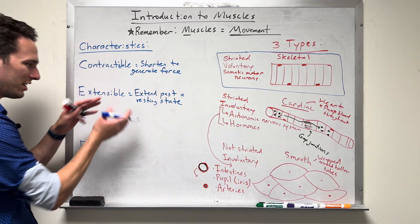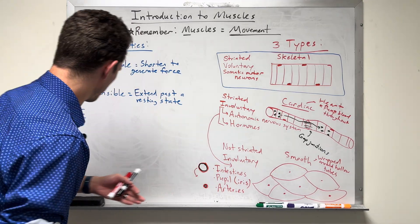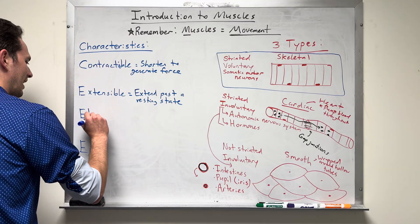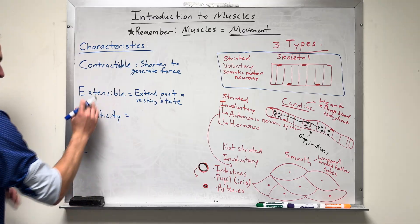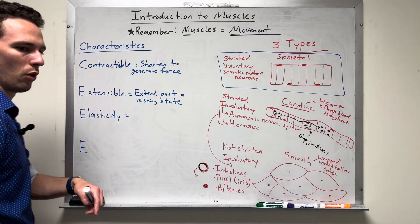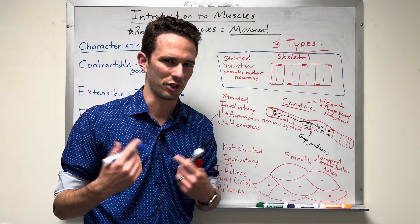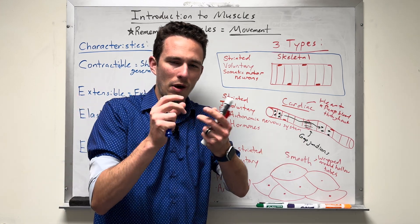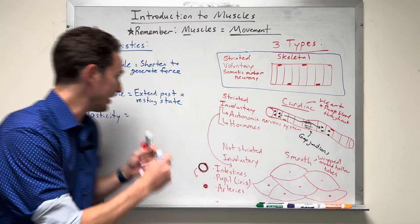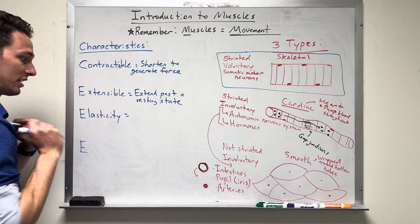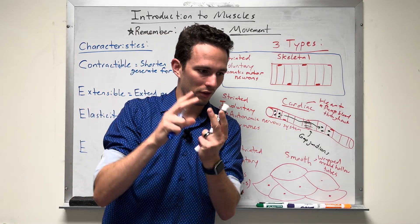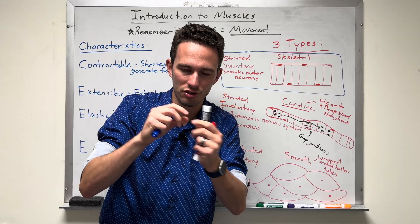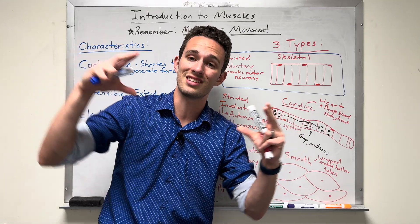This kind of goes hand in hand with the second part, which is going to be elasticity. So I like to think of extensibility and elasticity kind of going together because elastic, what's an elastic thing that you've probably heard of before? Like a rubber band. Well, rubber bands can extend, stretch past a resting state, but what do they want to do once you let go? They want to snap back close together. So they don't want to just stay extended.